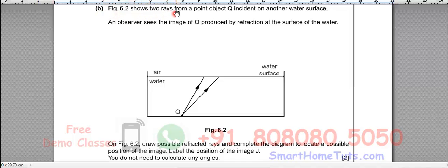Figure 6.2 shows two rays from a point object Q incident on another water surface. So this is your point object Q. An observer sees the image of Q produced by refraction at the surface of the water. The water surface is here so the observer's eye will come somewhere over here, so he is observing from this side.